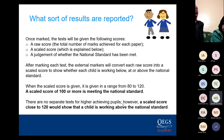There are no separate tests for higher achieving pupils. However, a scaled score close to 120 would show that a child is working above the national standard. In the past it's always been 100-plus as expected and 110-plus as greater depth, but it may change slightly this year — that is roughly the numbers we're looking at.